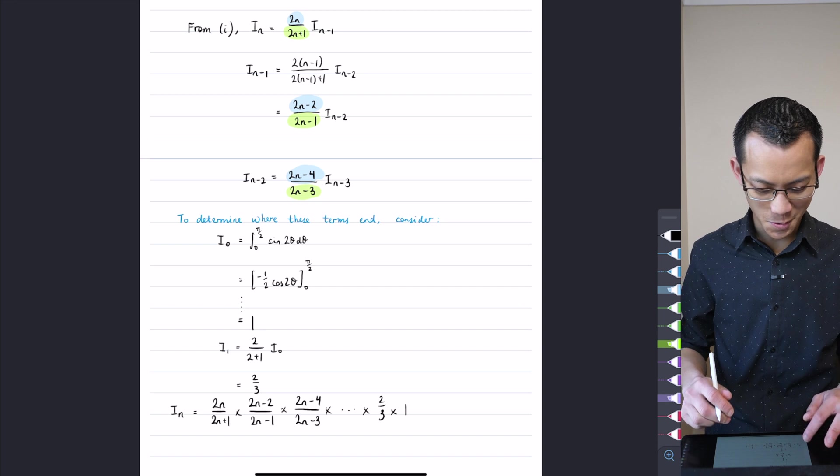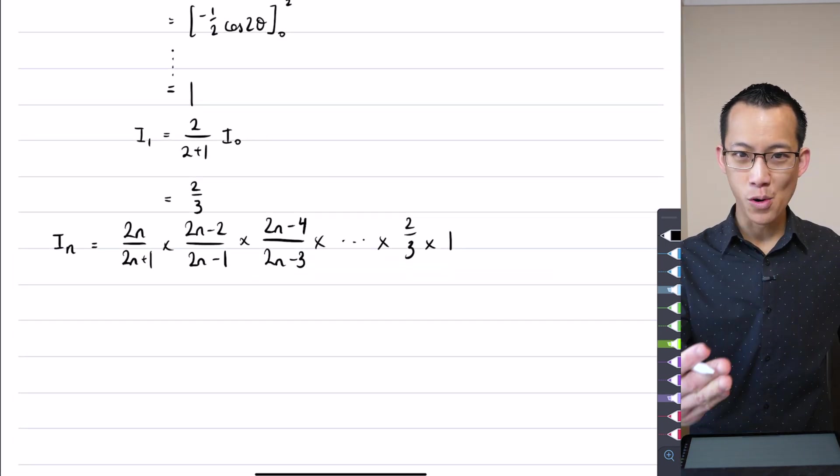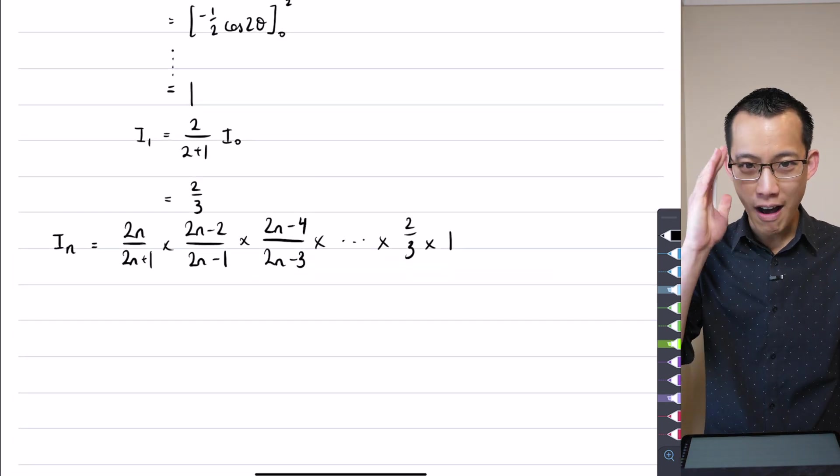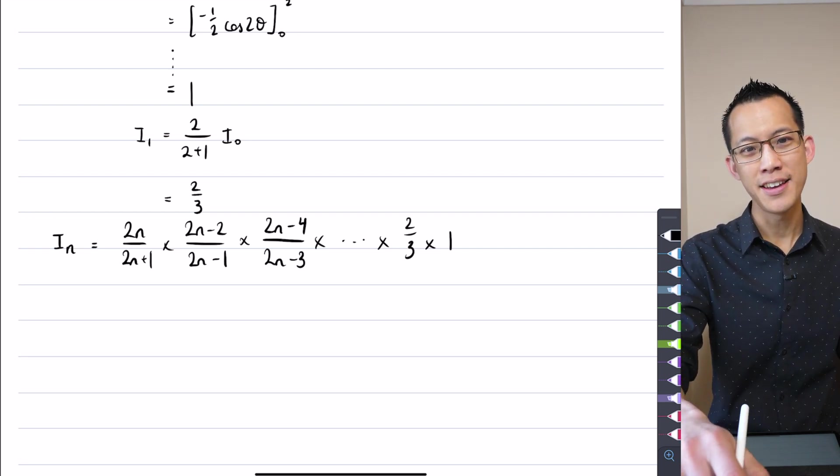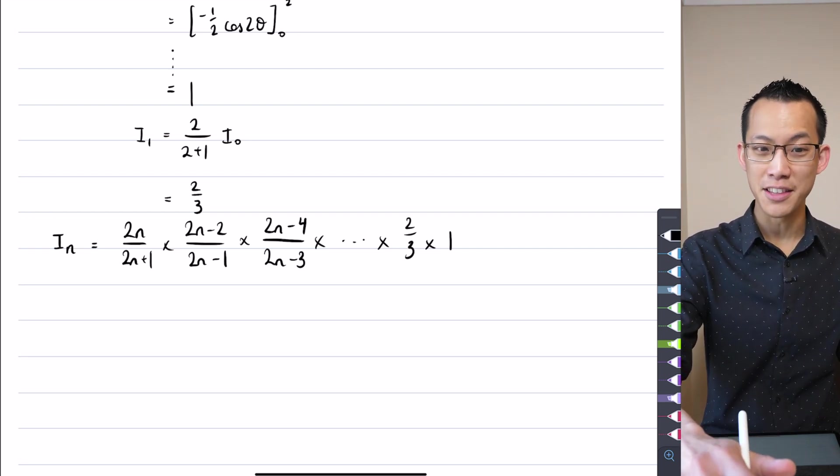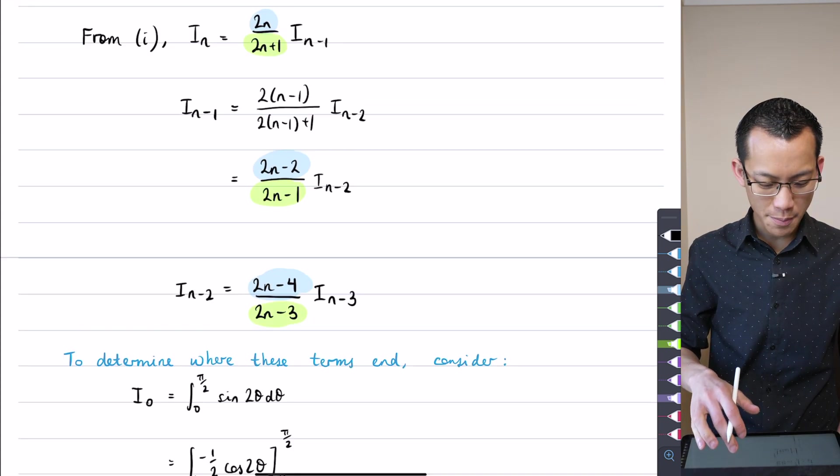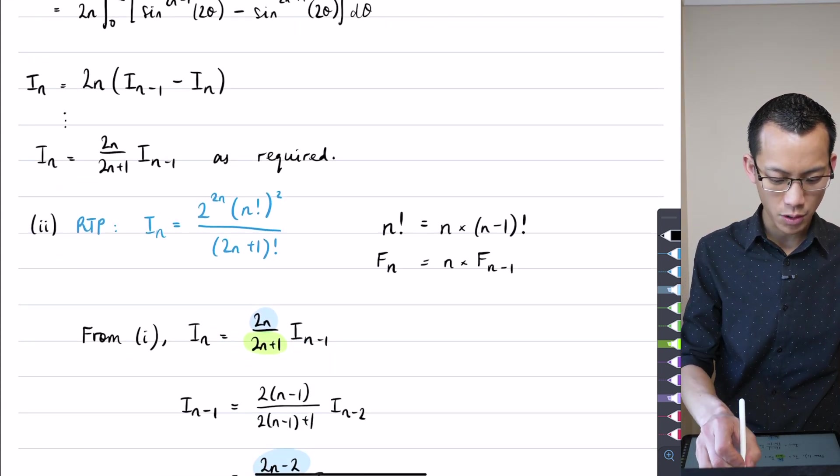All right, so what do I do with this thing? Well, as with all proofs, you need to have one eye on the sort of finish line, as well as one eye on the thing that you're working on at the moment. So if I go back up, you can see this is what I'm required to prove.